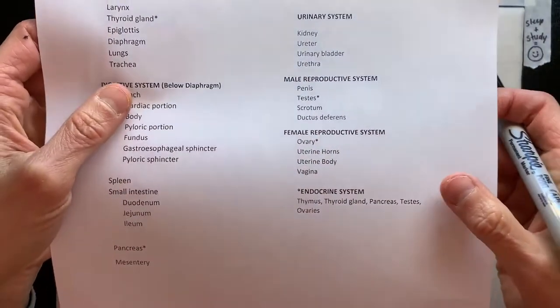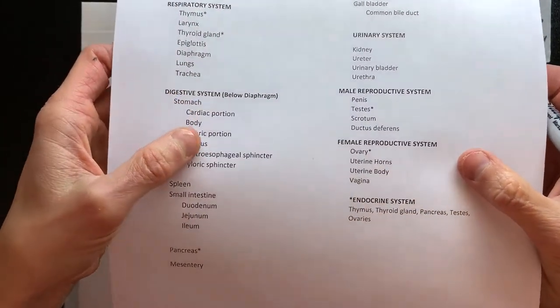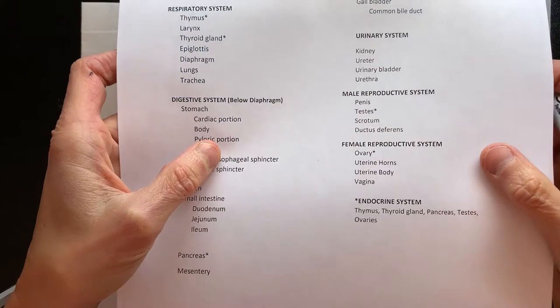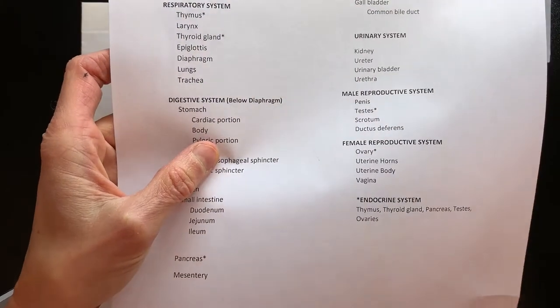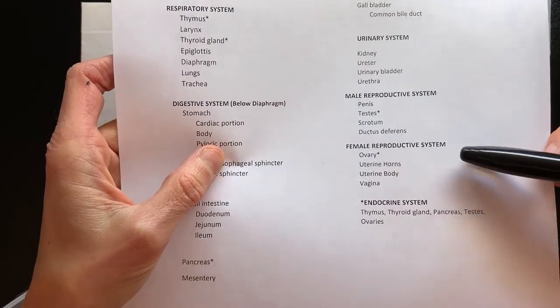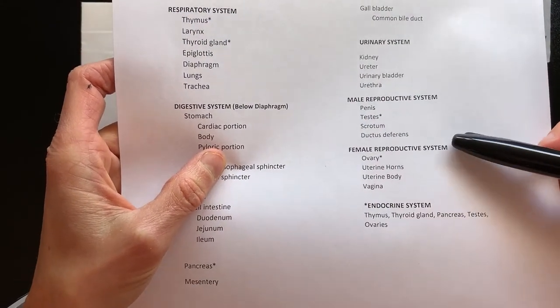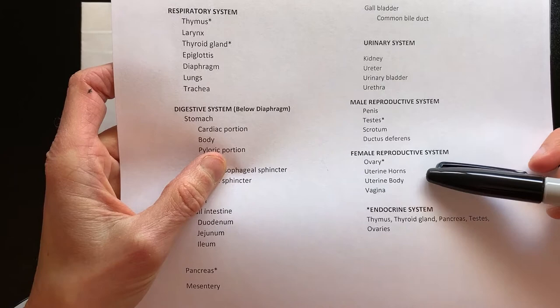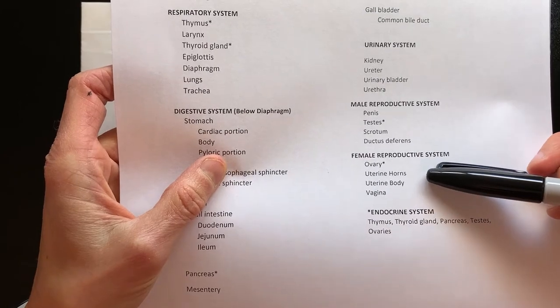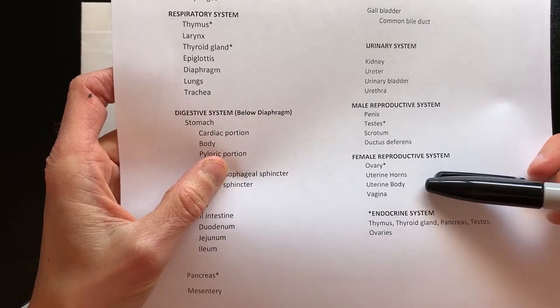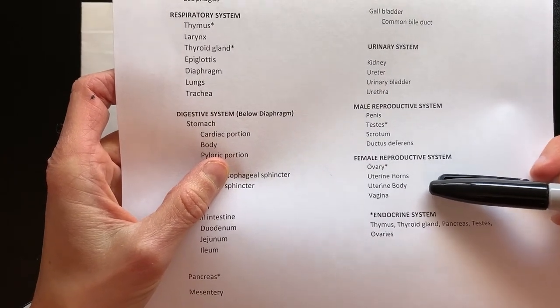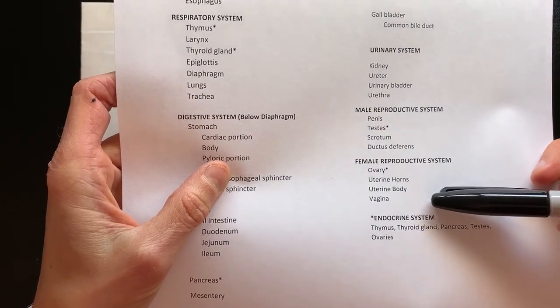Now we're going to look at the reproductive system. First we'll look at the female reproductive system. The female reproductive system includes the ovary, the uterine horns, the uterine body, and the vagina.